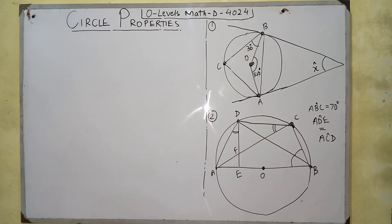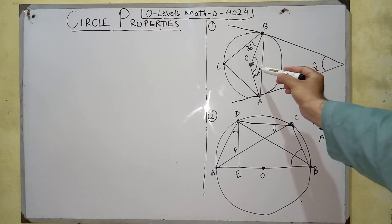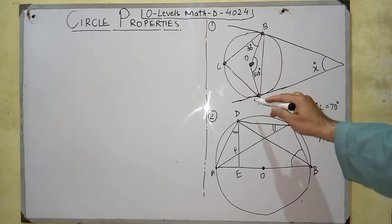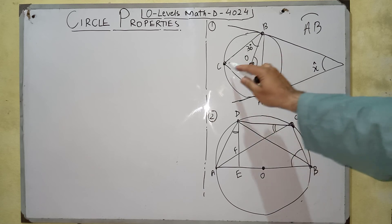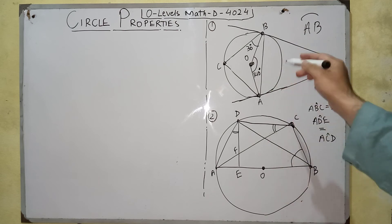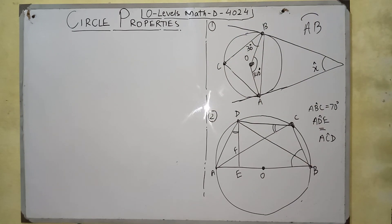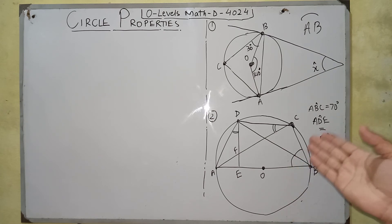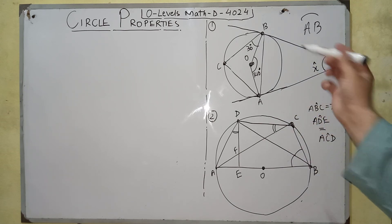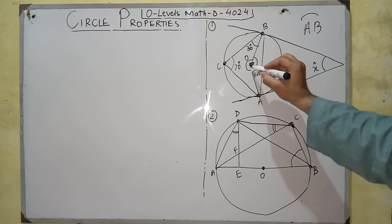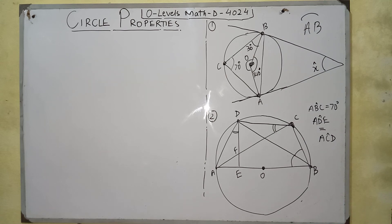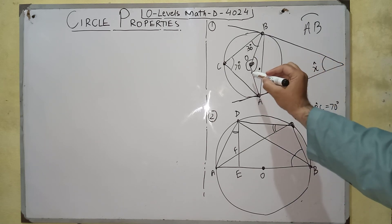Now we solve problem one. We can see that arc AB makes an angle of 140 degrees at the center of the circle. By the arc-angle property, the angle made by the same arc AB at the circumference will be half, which equals 70 degrees. Since the angles at a single point sum to 360 degrees, the reflex angle at the center will be 360 minus 140 equals 220 degrees.